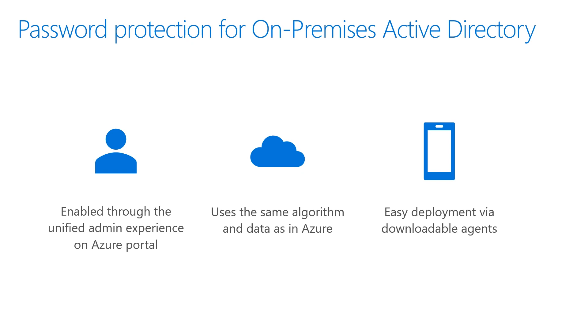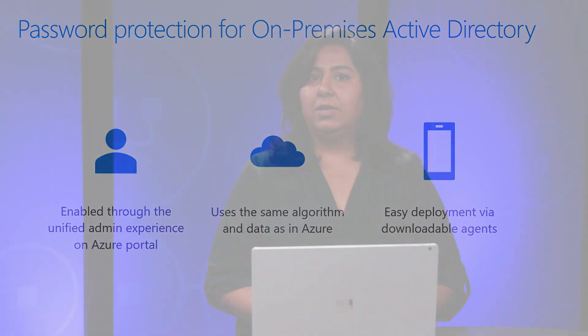The goal is to align with the password policy enforcement from Azure all the way down to Active Directory. This is done by installing an agent on the domain controllers and a proxy agent on either the DCs or another server if you have blocked internet connection to your DCs. The password policy is mastered in Azure AD and you cannot change it in AD — you will have to use Azure Portal to make changes, which will then be applied to both Azure and on-prem.